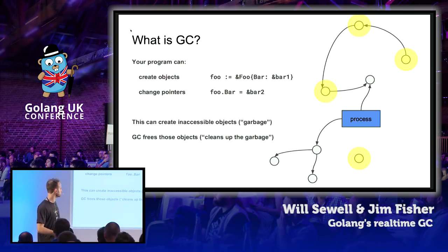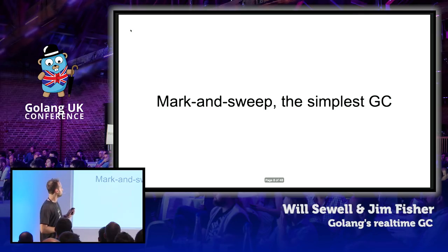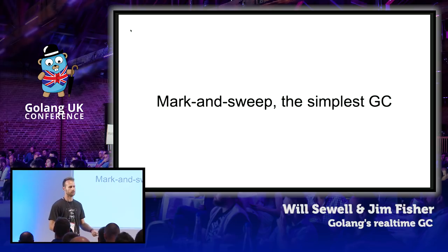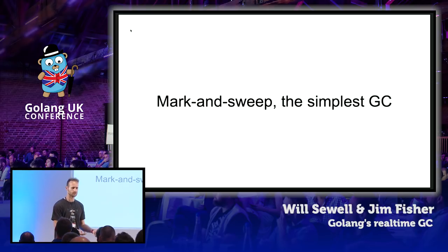Those unreachable objects are useless — they're garbage, they're taking up memory, and you want to get rid of them. That's what your garbage collector does. There are many ways to do it. I'm going to show you one way called Mark and Sweep, for a couple of reasons: firstly, it's the classic algorithm for garbage collection, and secondly, it's the precursor to understanding how Go's garbage collector works.